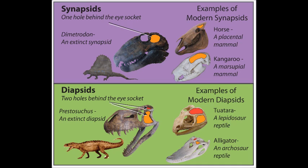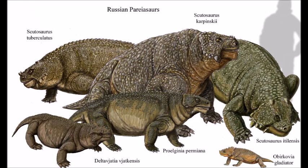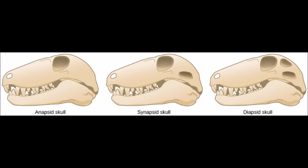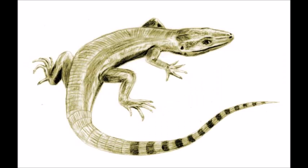Synapsida is a group of reptiles distinct from diapsids, which is comprised of the tuatara, lizards, snakes, crocodiles, birds, and turtles, and anapsids, which is only comprised of some extinct reptiles with morphological characteristics separate from the other two clades. The important morphological difference among these is that anapsids have no temporal fenestrae, synapsids have one, while diapsids have two. The temporal fenestrae is a site for jaw muscle attachment.